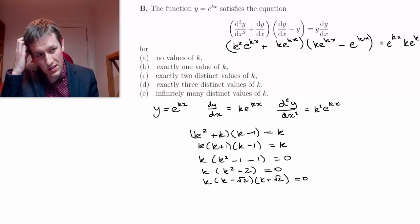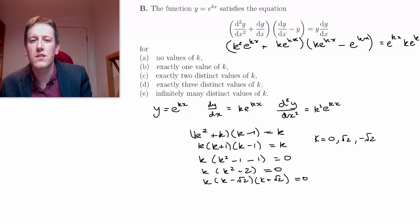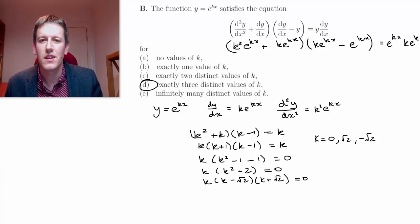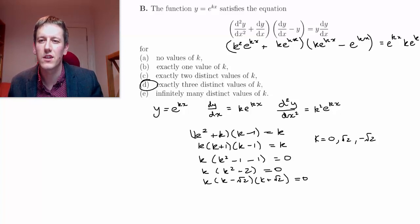So we can see that this has got three solutions. k equals 0, k equals root 2 and minus root 2. And so the answer then must be d, that the function can satisfy this equation for three distinct values of k.